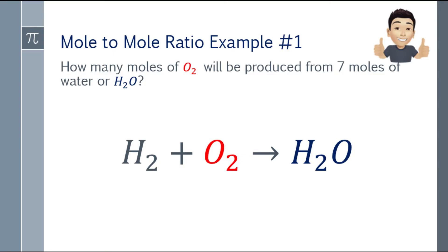First example: how many moles of O2 will be produced from 7 moles of water (H2O)? We have the chemical equation H2 + O2 = H2O. First, check if the equation is balanced — it is not, so we need to balance it.